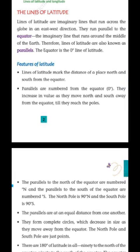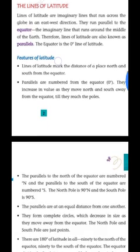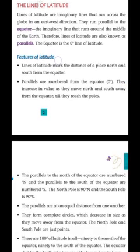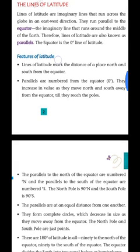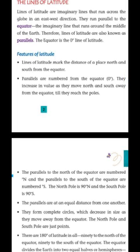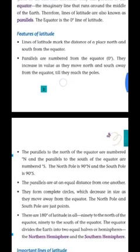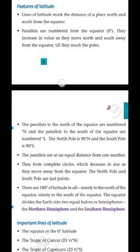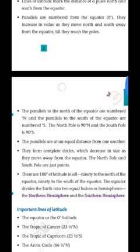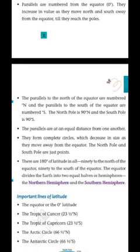जैसे-जैसे poles में पहुँचते हैं — zero degree के बाद first, second, third, fourth — ऐसे बढ़ता चला जाता है। North में 90° तक और south में 0° to 90° होता है। The parallels north of the equator are numbered degree N and the parallels south of the equator are numbered degree S. The north pole is 90°N and the south pole is 90°S.